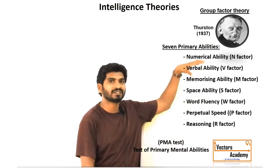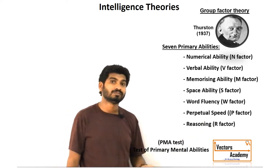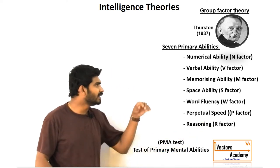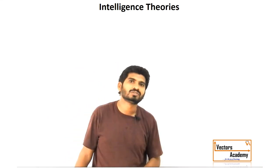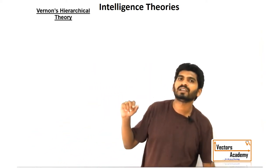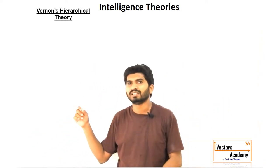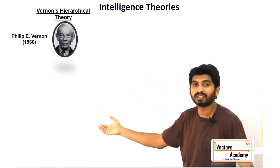The addition of these factors gives you the intelligence of a person. Even this theory has certain practical drawbacks. So Vernon combined both the two-factor theory and the group factor theory and came up with his own theory.